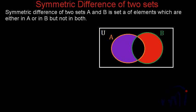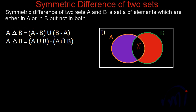How do we represent the symmetric difference? The symmetric difference of two sets A and B is represented as A△B. These are the two ways in which you can represent the symmetric difference of two sets.